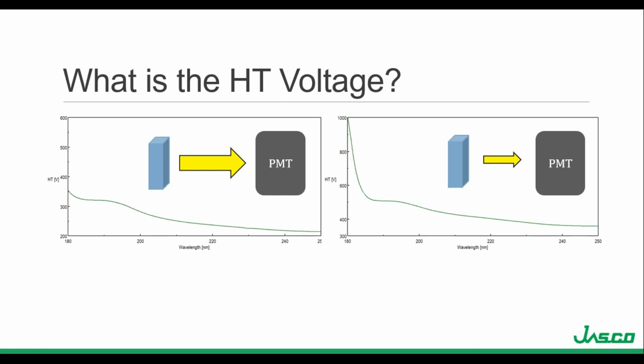Before discussing these factors, I need to explain the second most important piece of data to acquire along with the CD signal: the HT voltage, or high-tension voltage. The HT voltage is applied to the detector and used to amplify the signal and therefore the sensitivity. Since different wavelengths have different light energies, the HT voltage accommodates for fluctuations in the light level. It adjusts the amplitude of the signal depending on the DC voltage, which monitors the total signal output or total absorbance. When a sample has an optimal concentration, a sufficient amount of light is transmitted through the sample and reaches the detector, and the HT voltage is low.